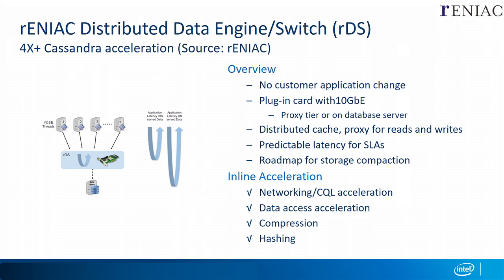The networking traffic comes into the accelerator, parses the protocol, figures out the request, hashes and indexes to pull the data, and then sends it back out — kind of like a proxy to your Cassandra application server. Better compression will also give you a pretty good result.